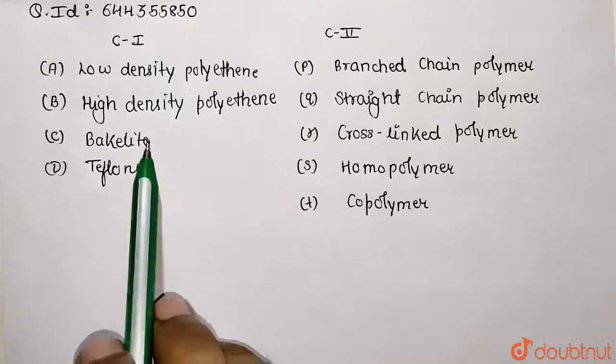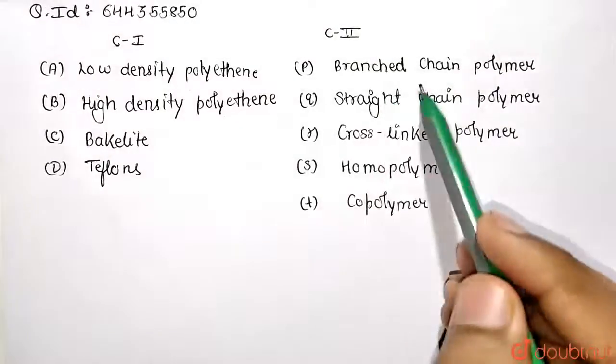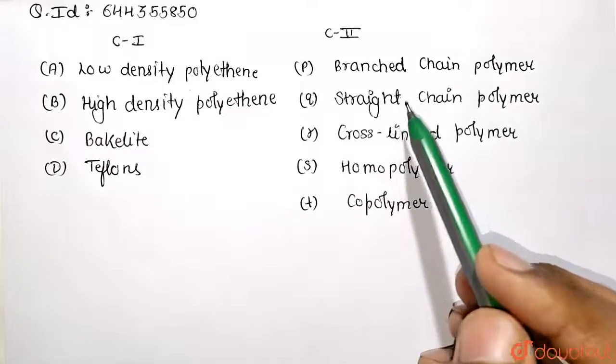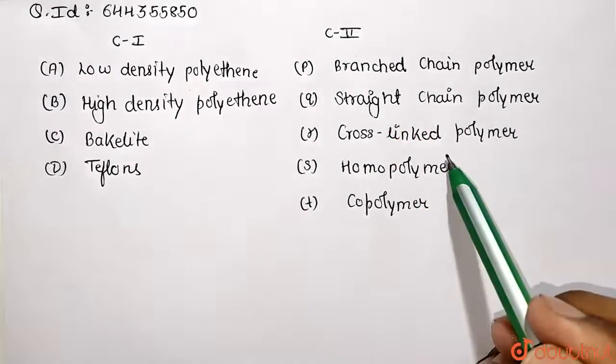Let's first understand them. Branched chain polymers are basically made from the branching structure. Straight chain polymers are joined in straight chains. Cross-linked polymers are formed when there is elimination of some smaller molecules like water, alcohol, etc.